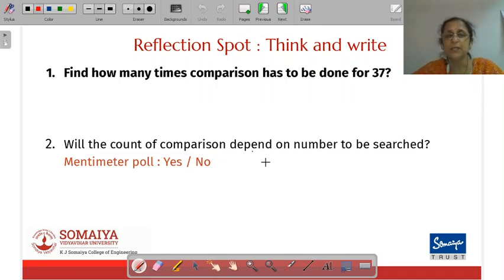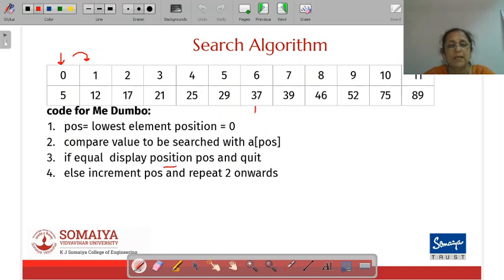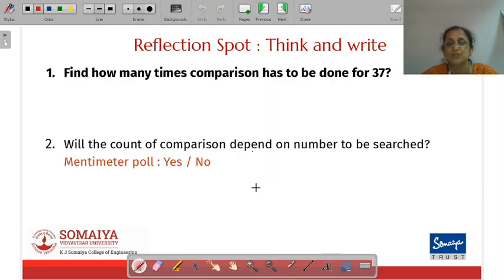So answer this question also on the poll: Will the count be dependent on the value to be searched? Yes. Like most of you have said yes. One person has said no probably because he wrote the for loop for those many number of elements. But please note that you are going to break the for loop or quit the for loop when you find the position. So the count does depend on the value to be searched. You don't do any more comparisons when you identify the position.